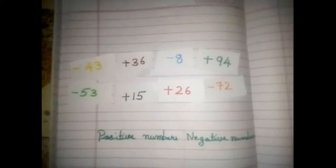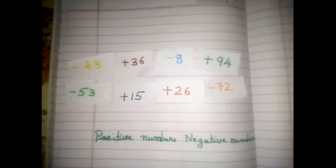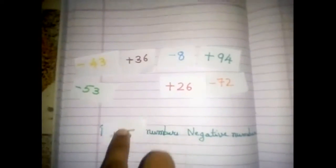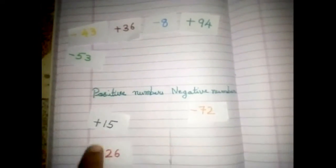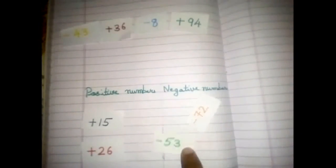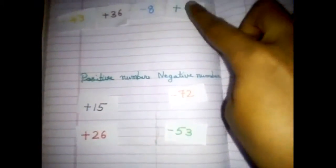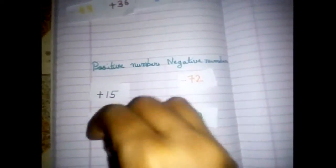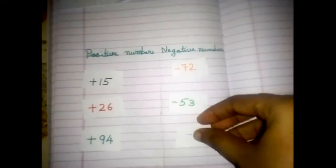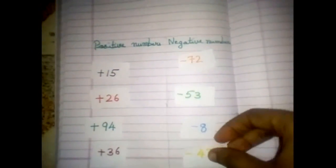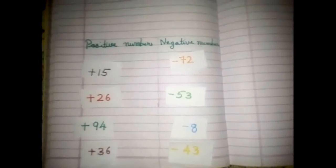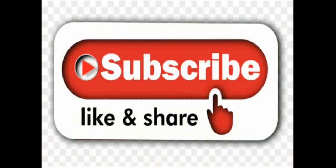You have to classify and arrange positive numbers and negative numbers — this is for your activity. If you understood the examples of the chapter, give us your feedback or comments, subscribe to the channel, like and share. Thank you.